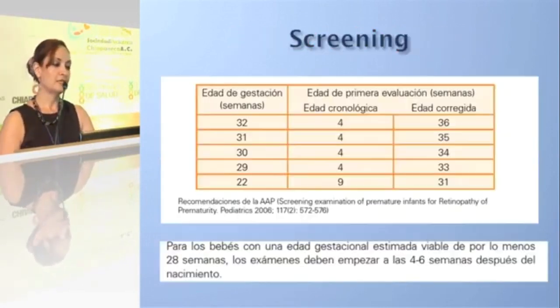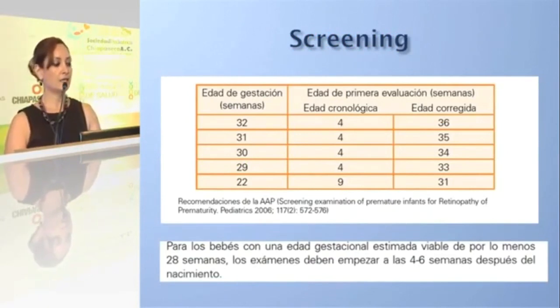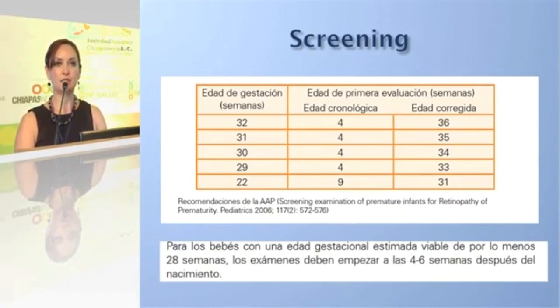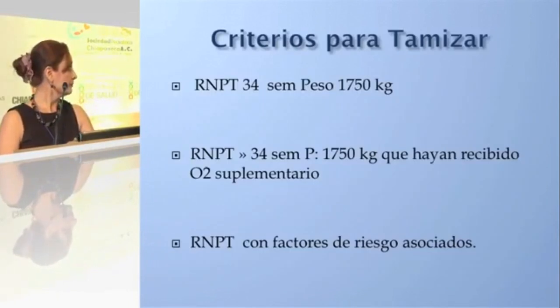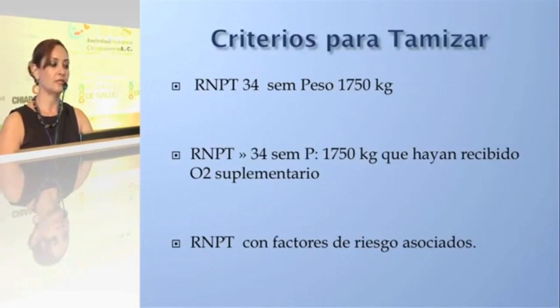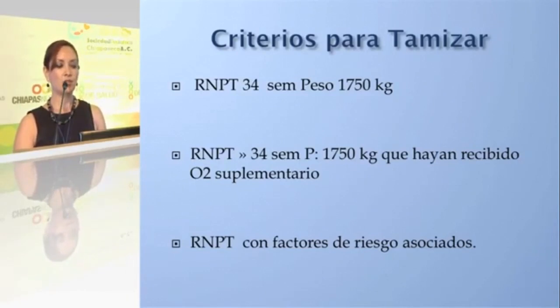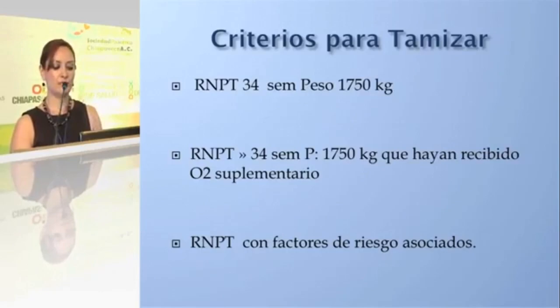Screening, according to Mexican guidelines, should begin between week 32 and four weeks of life for infants with an estimated viable gestational age of at least 28 weeks; exams should begin between the fourth and sixth week after birth. Criteria for screening include all premature infants under 34 weeks with weight below 1,750 g, or those over 34 weeks with greater weight but who received supplemental oxygen or at the physician's discretion. American guidelines recommend screening for infants under 32 weeks with weight below 1,500 g.